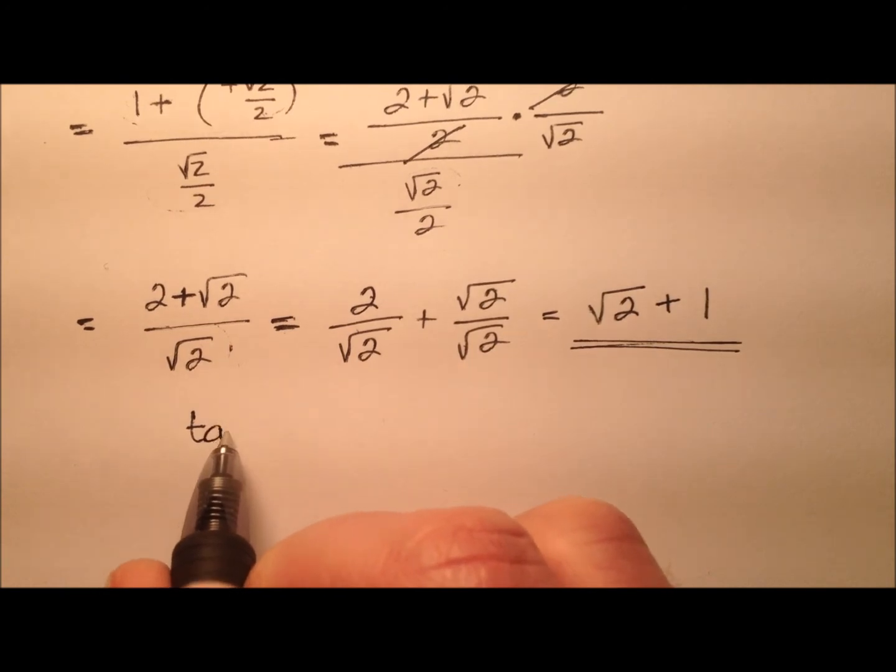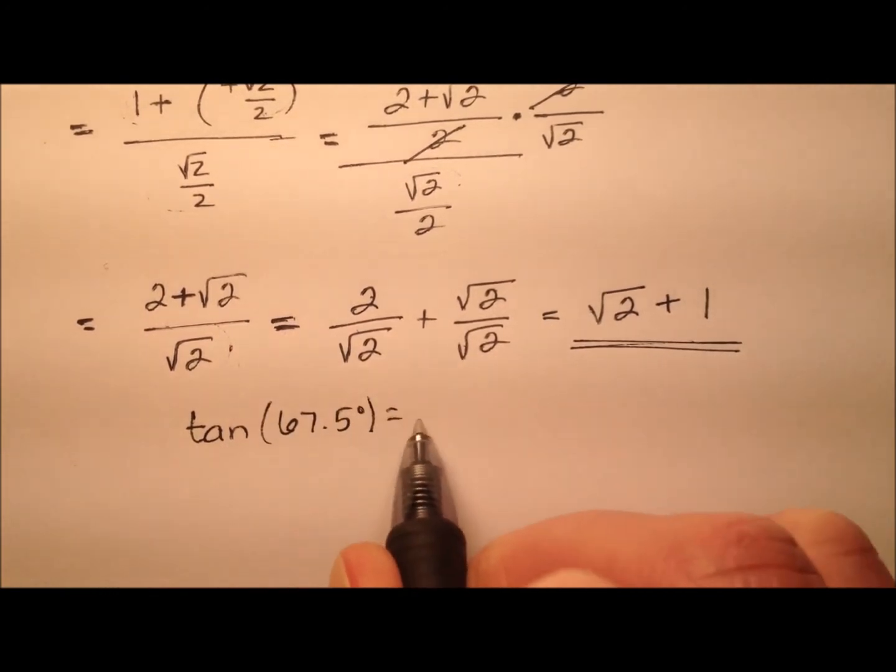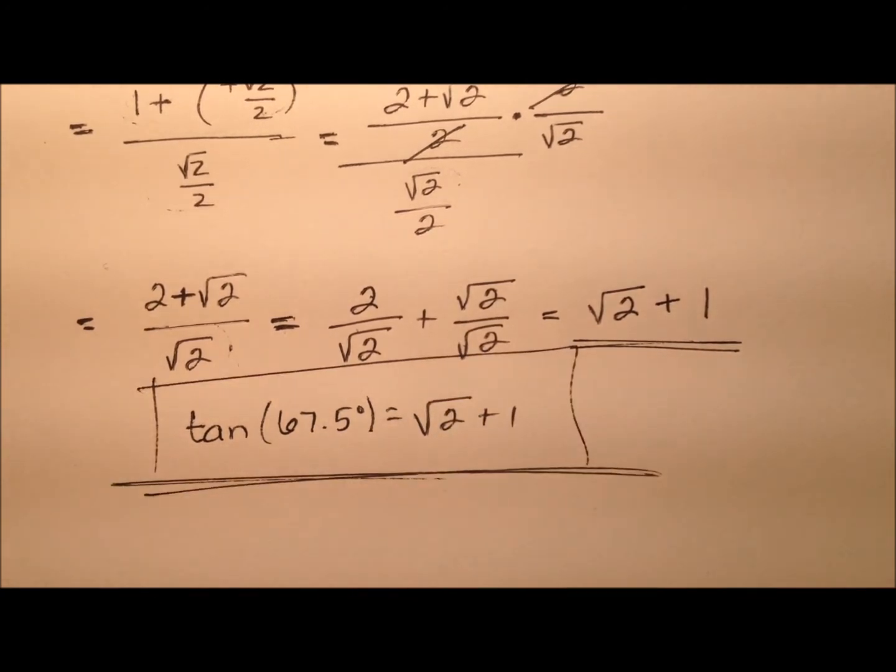So I'm going to go ahead and write the tangent of 67.5 degrees equals the square root of 2 plus 1.